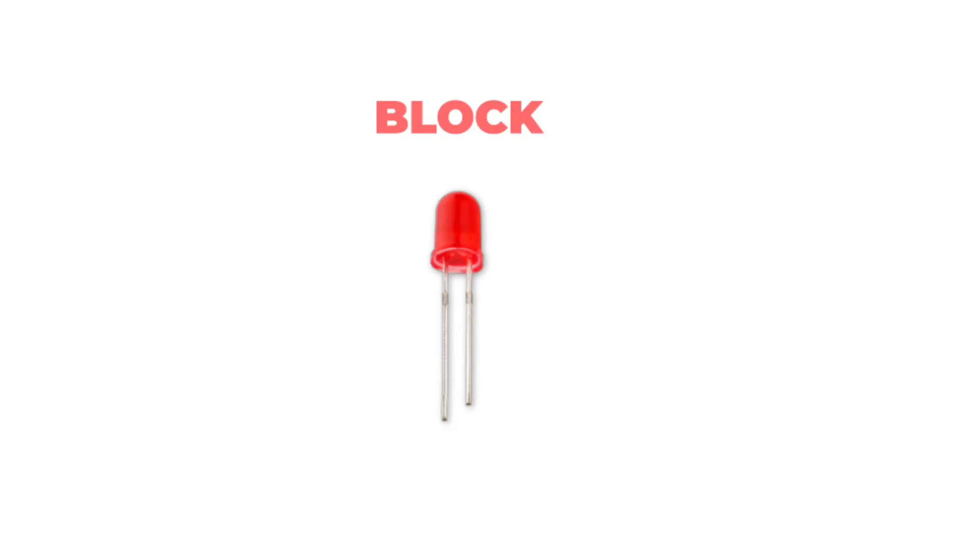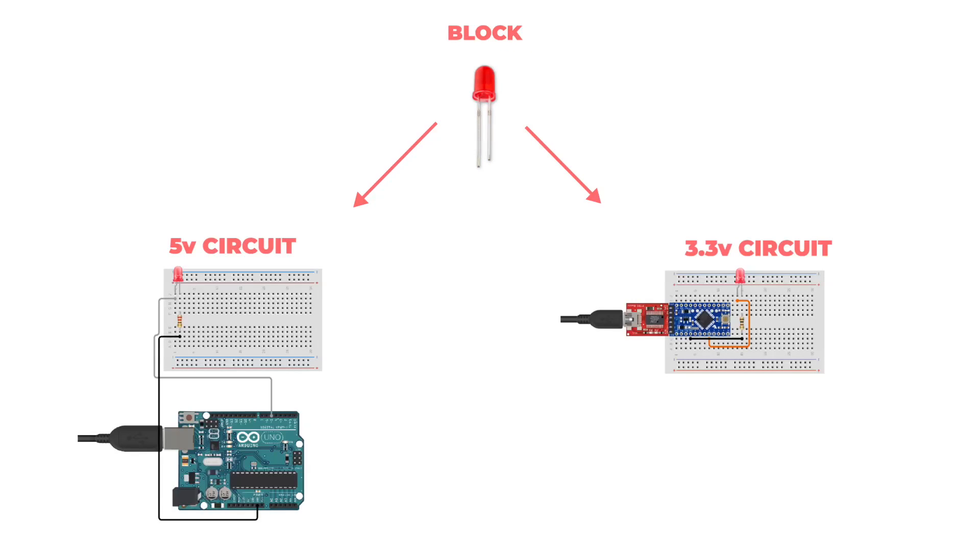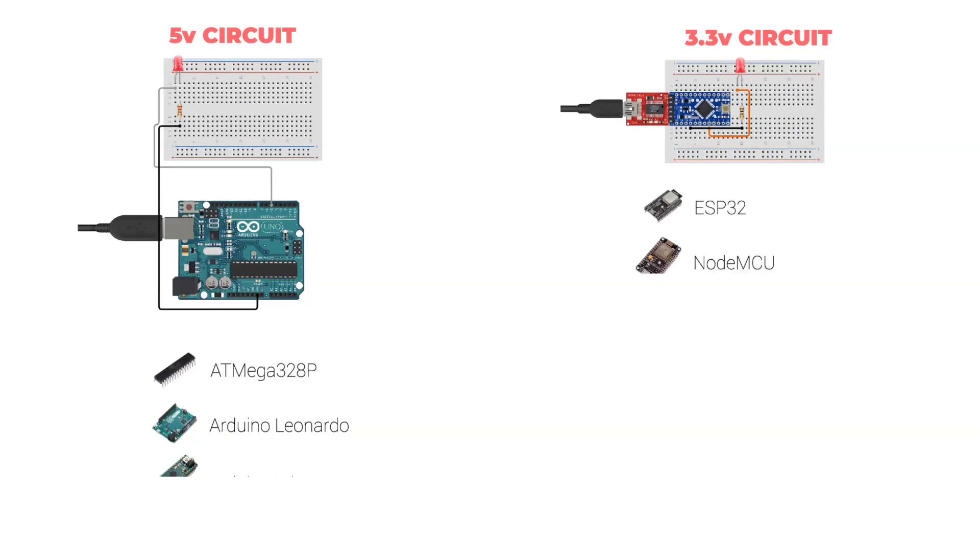Here you can see that the red LED block actually contains two different circuits. Each circuit describes a different wiring method to different microcontrollers.